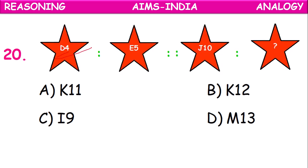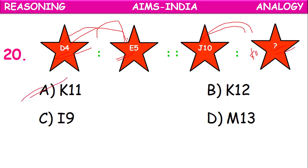D4 is related to E5 — D comes after E, 4 comes after 5. So J10 is related to K11, because J comes before K and 10 comes before 11. K11 should be the answer.